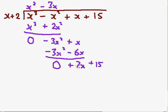Now I go, how many x's could I get into 7x? Well, I can get 7 in. Then I multiply through by 7. So 7 times x is 7x. And 7 times 2 is 14. 7x take away 7x is 0. And 15 take away 14 is 1. OK, so when I divide x cubed take away x squared plus x plus 15 by x plus 2, I get x squared take away 3x plus 7 remainder 1.